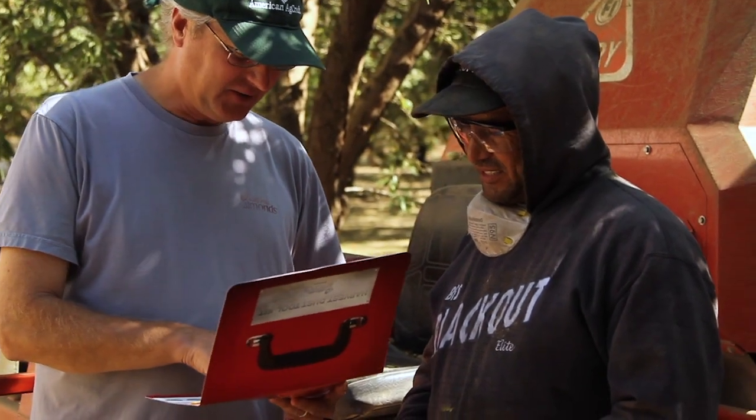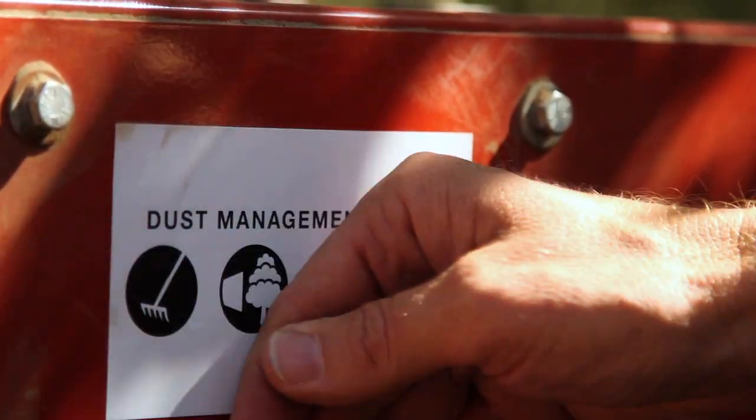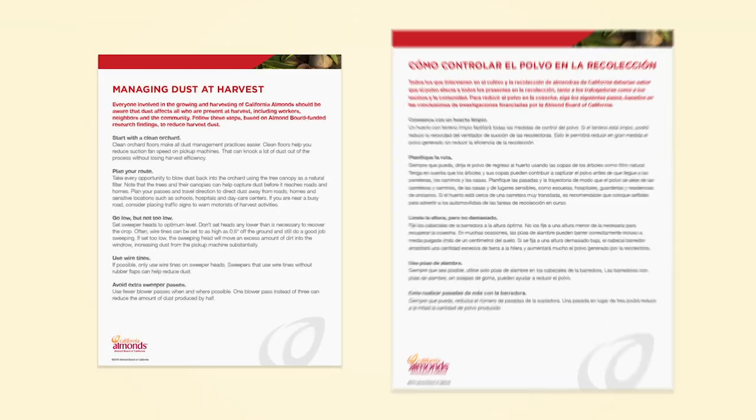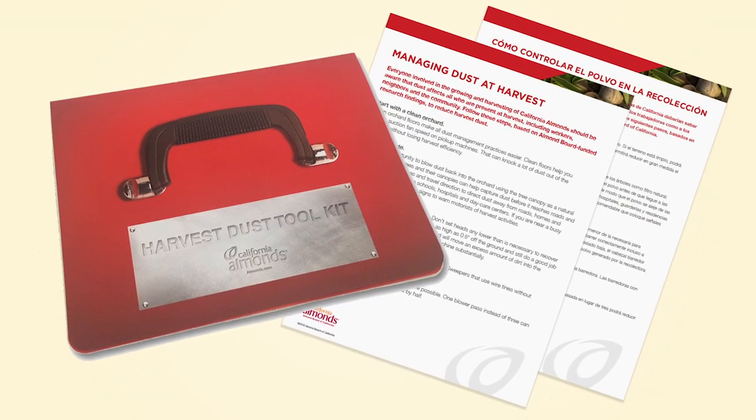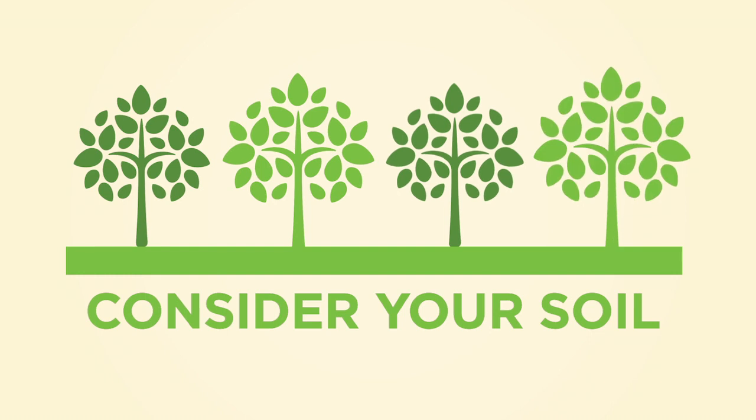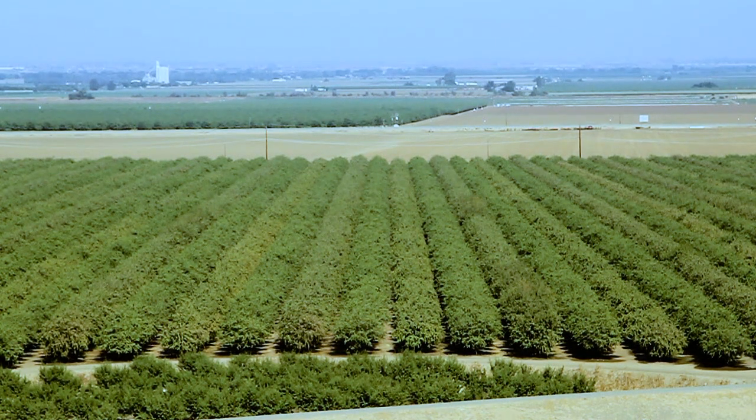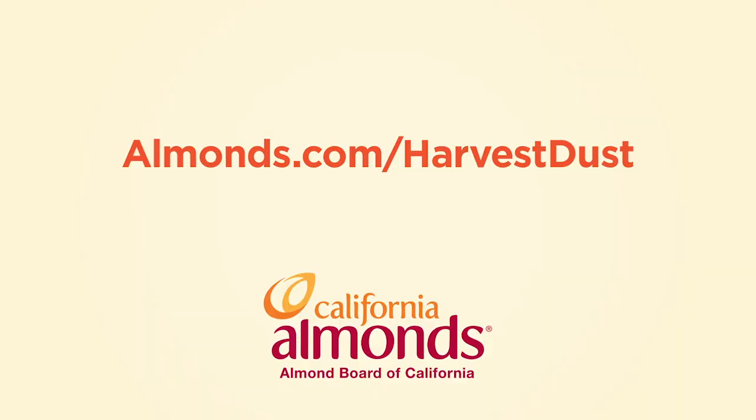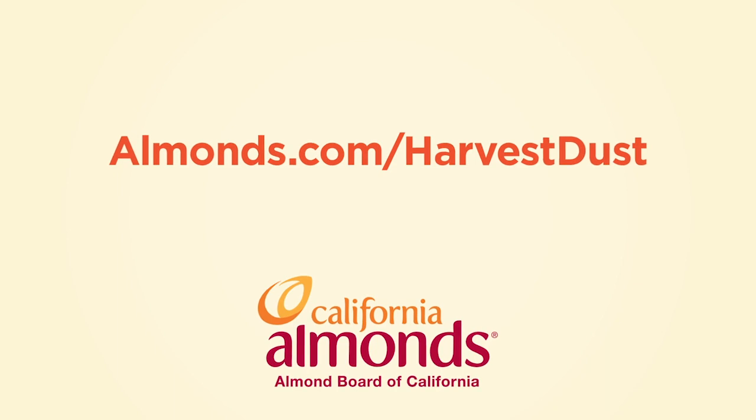For helpful tools and reminders on how best to reduce harvest dust, please refer to additional Almond Board materials, such as technical guides and the Harvest Dust Toolkit. Remember to keep dust inside the orchard, consider your soil, and consider your neighbors. Together, we can all breathe easy during harvest. To access any of these materials, simply visit almonds.com/harvestdust.